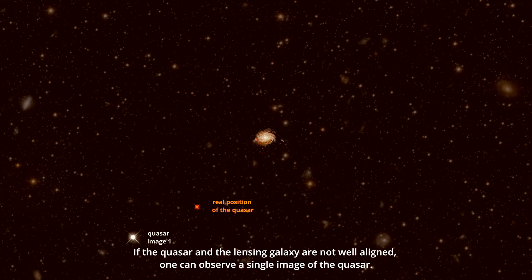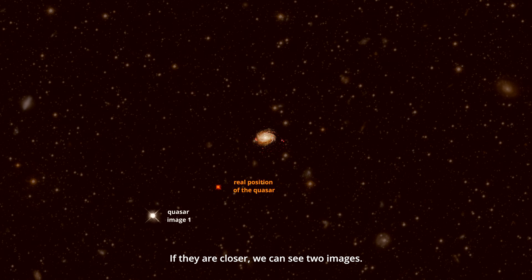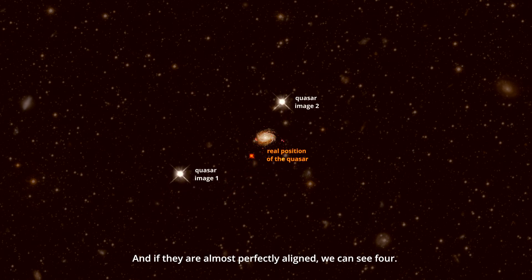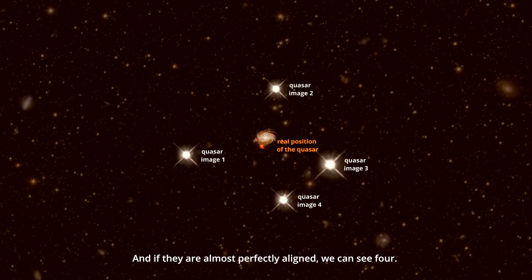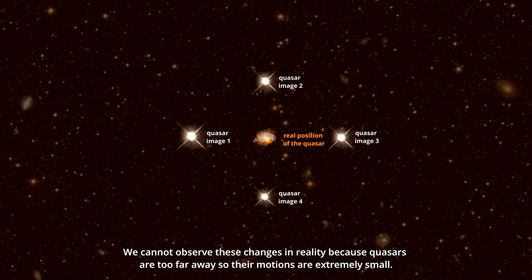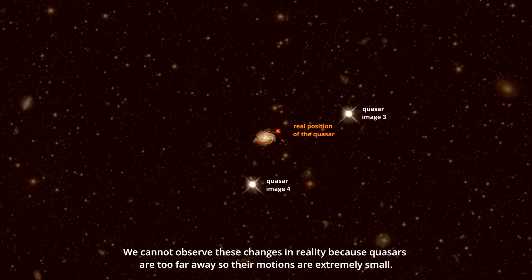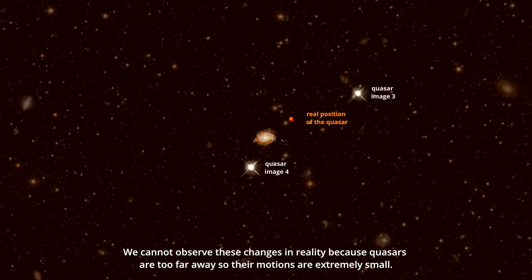If the quasar and the lensing galaxy are not well aligned, one can observe a single image of the quasar. If they are closer, we can see two images. And if they are almost perfectly aligned, we can see four. We cannot observe these changes in reality because quasars are too far away so that their motions are extremely small.